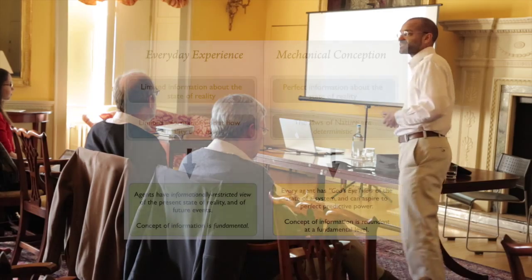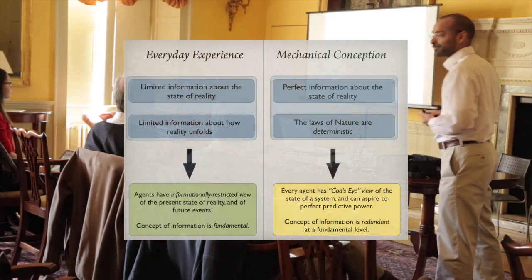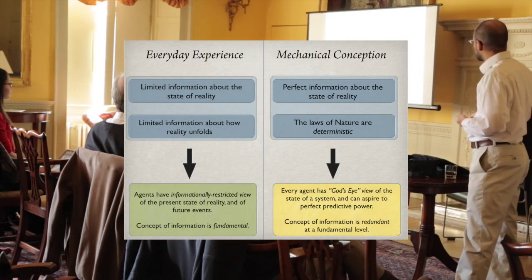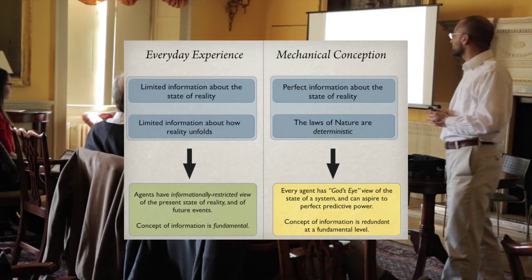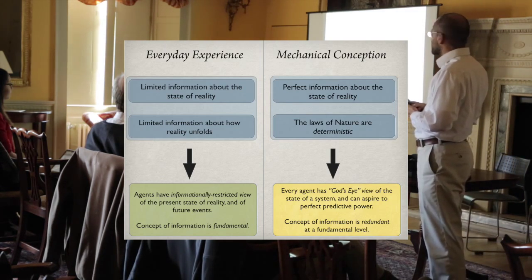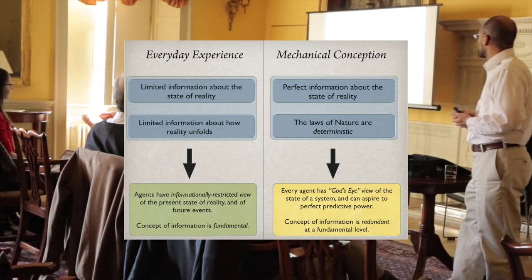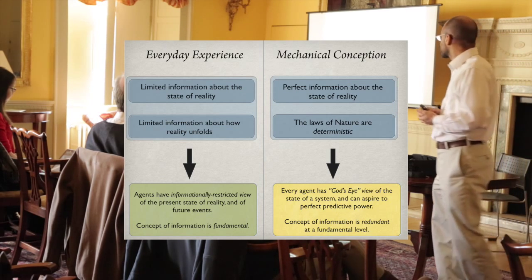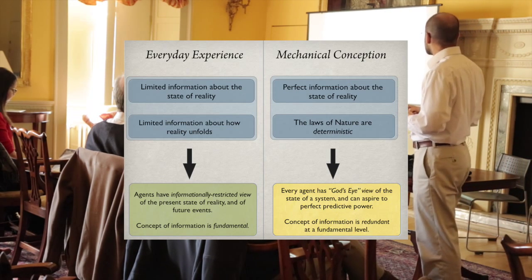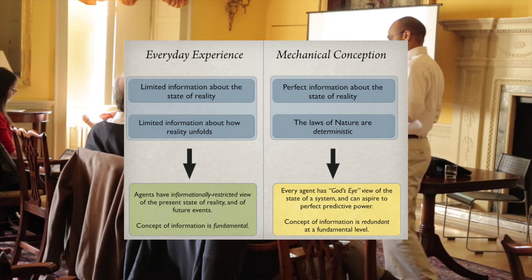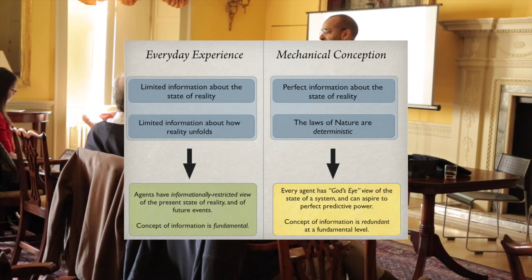We can contrast everyday experience. In the folk model, agents have a fundamentally information-restrictive view of the present state of reality and future events. Information arises whenever there's a tension between something that exists, or we think exists, and what we know about what exists.